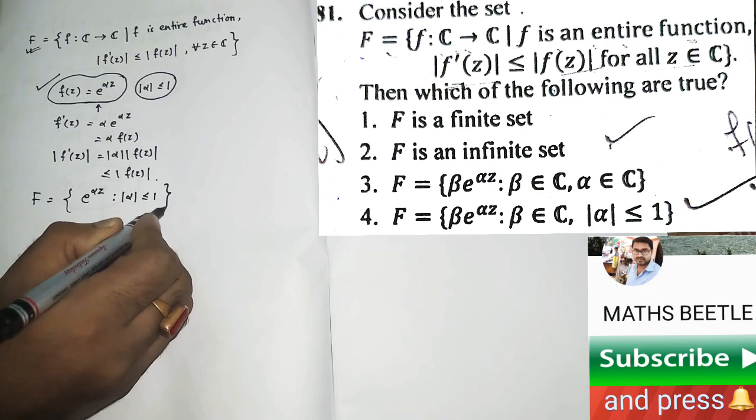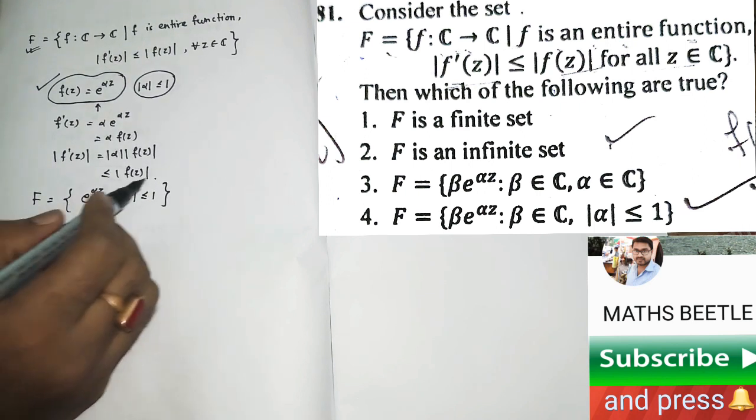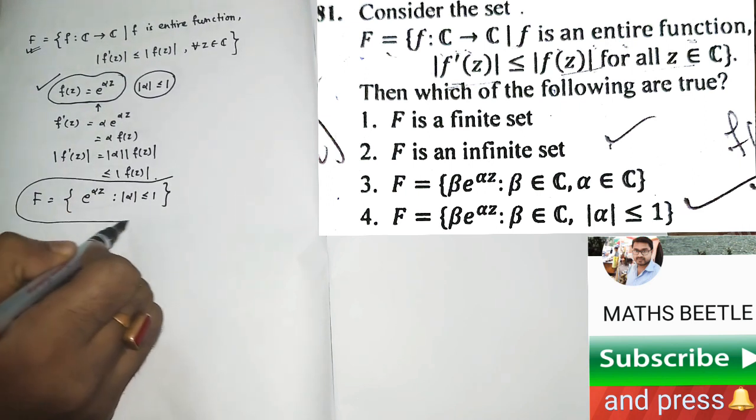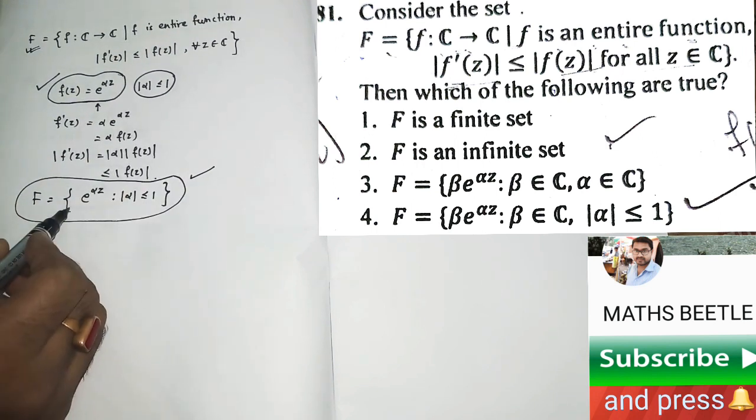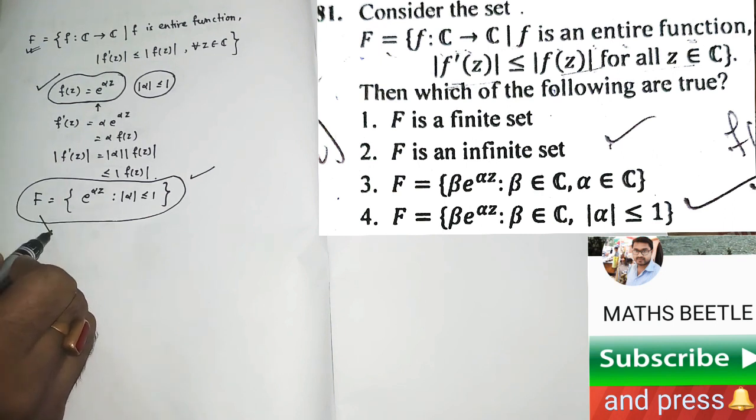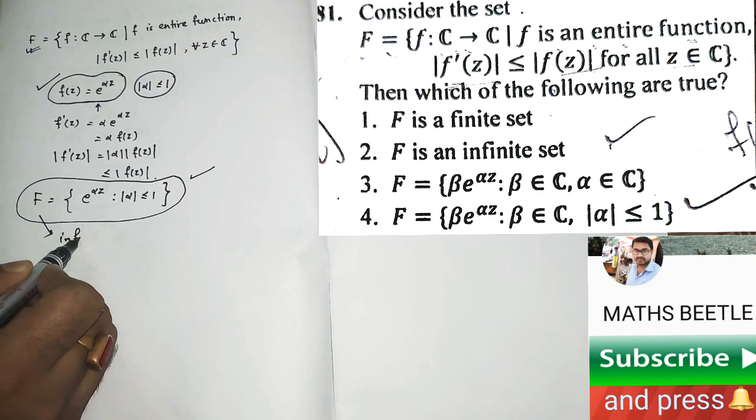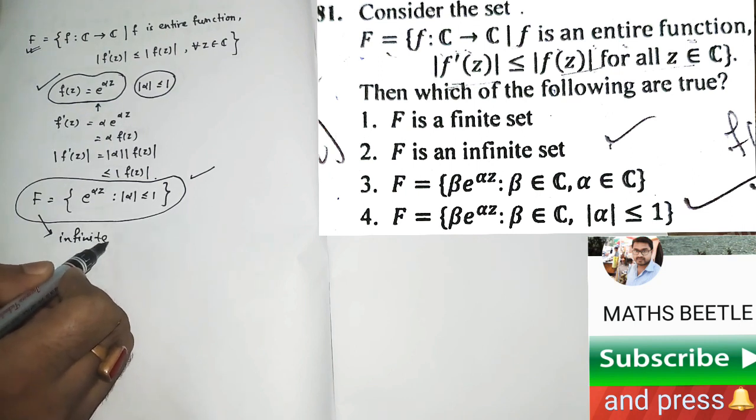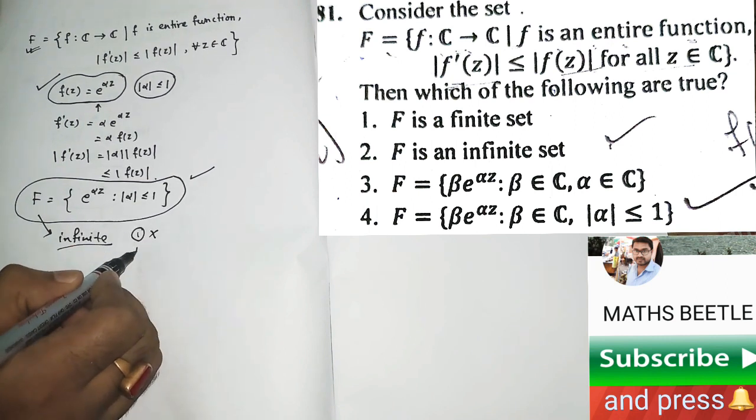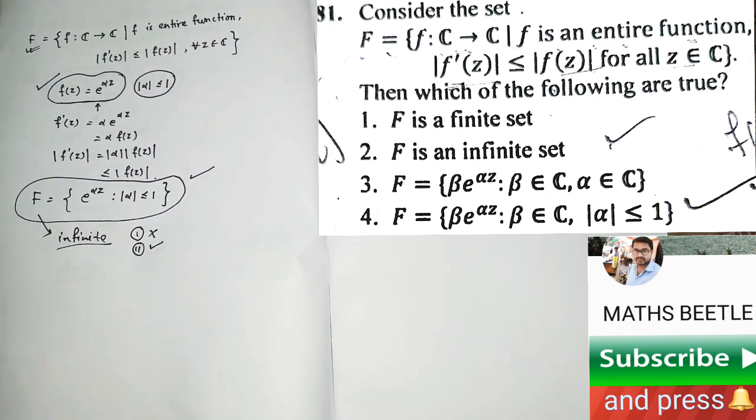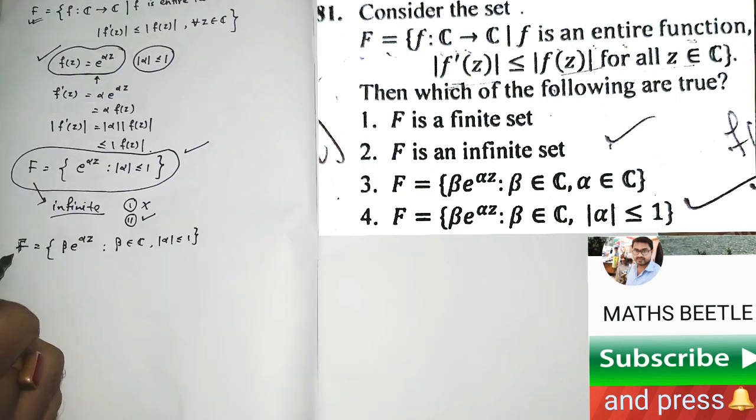This is going to be F(z) for that example, and it is clear that this F is an infinite set. So the first option is false and the second one is correct.